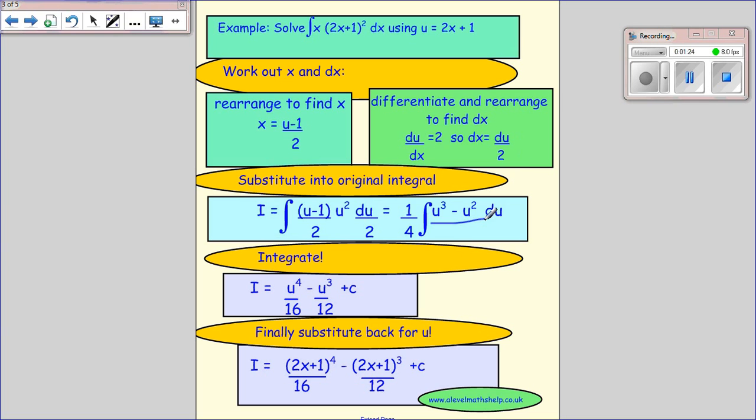When you integrate a power you add 1 to the power and divide by the adjusted power. So u cubed becomes u to the power of 4 over 4, and 4 times 4 gives you 16 so you get this term. u squared becomes u cubed over 3, 3 times 4 is 12 so you get this term, and don't forget to put the plus c.